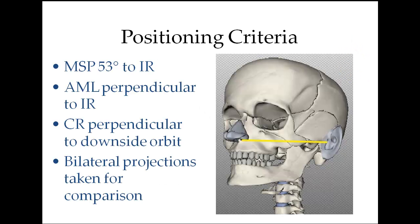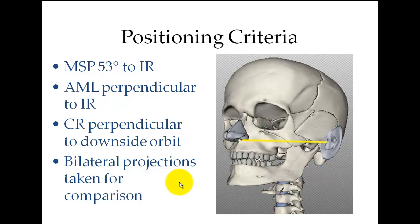Positioning criteria for the Reece View: you need the midsagittal plane 53 degrees to the image receptor. That's an odd number, but that's how the optic foramen is housed in relationship to the orbital rims. The acanthiomeatal line should be perpendicular to the IR. Central ray is perpendicular to the downside orbit — if the tube were on the opposite side, the central ray would exit right through the middle. We always want the orbit closest to the image receptor if possible.